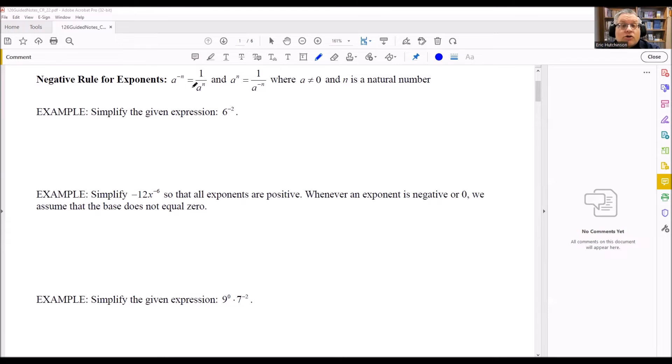In general, you usually don't want to leave something in terms of negative exponents. You want to write it as a positive exponent. That's what we're going to do for these examples.